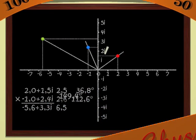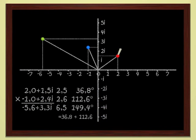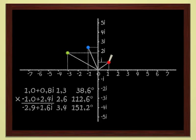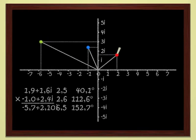That is, the sum of the arguments of the two numbers. When we multiply two complex numbers, moduli are multiplied and arguments are added.